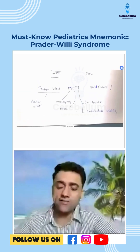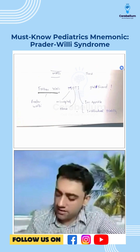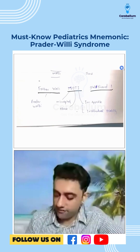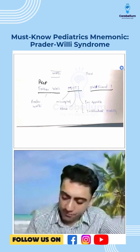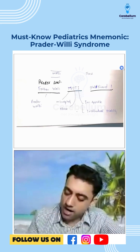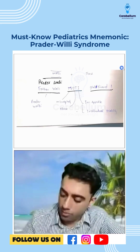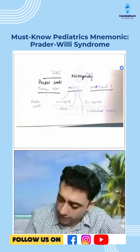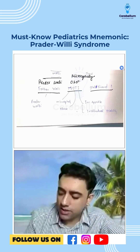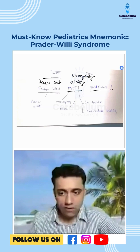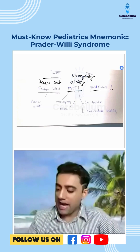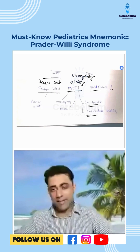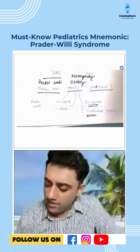The mnemonic for Prader-Willi syndrome is 'Father Wali Moti Girlfriend.' Father Wali stands for Prader-Willi. MOTI: M is for microcephaly, O is for obesity, T is for increased appetite, and I is for intellectual disability.